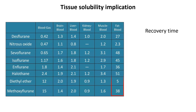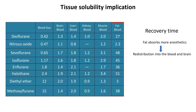Second, tissues such as fat have a high tissue-blood partition coefficient, meaning they absorb more anesthetic than other tissues for any given agent. A large amount of anesthetic can be absorbed into fat tissue before the arterial partial pressure equilibrates with the fat partial pressure. This stored anesthetic is gradually released back into the circulation during recovery, which can prolong the overall effect of anesthesia and delay emergence.